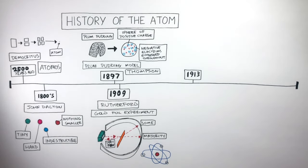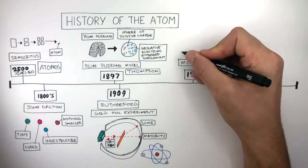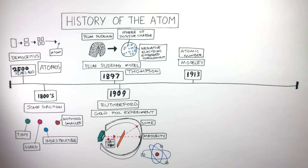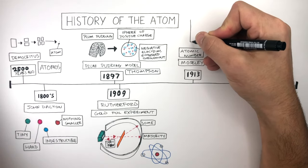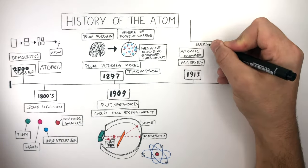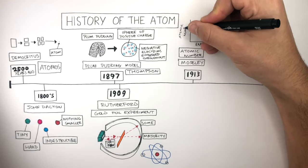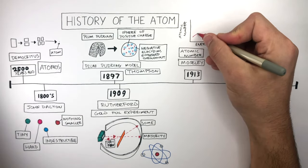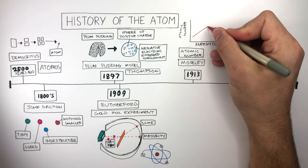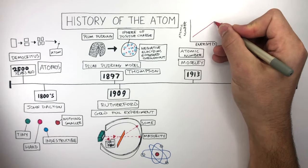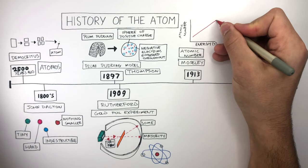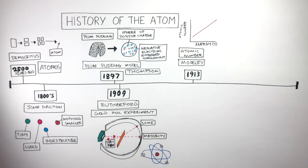In 1913 Moseley discovered the atomic number. He fired high energy electrons at different elements which all released different amounts of x-ray energy. Moseley plotted his results on a graph where on the x-axis is energy and the y-axis is atomic number. The results showed him the amount of x-ray energy released is proportional to the atomic number. So Moseley came to the conclusion the atomic number must be the number of protons an atom has.